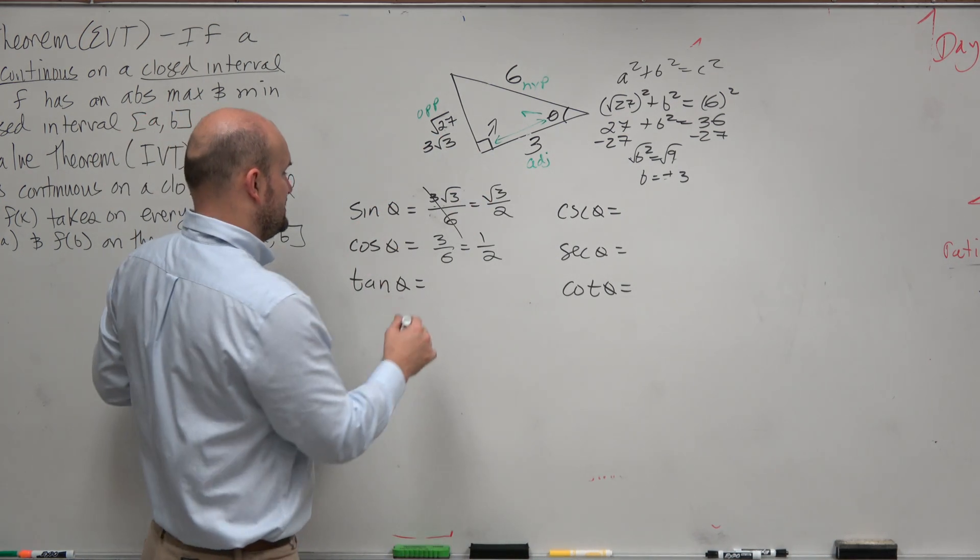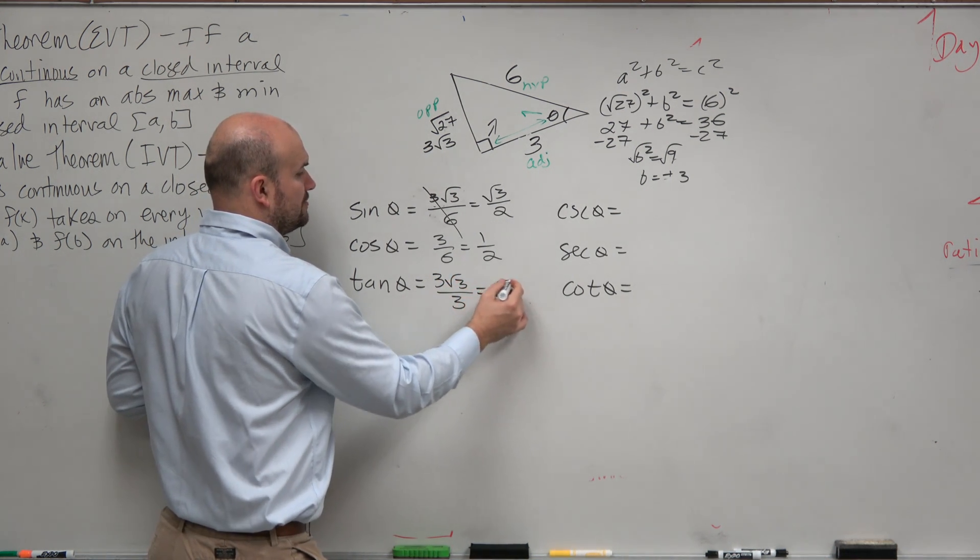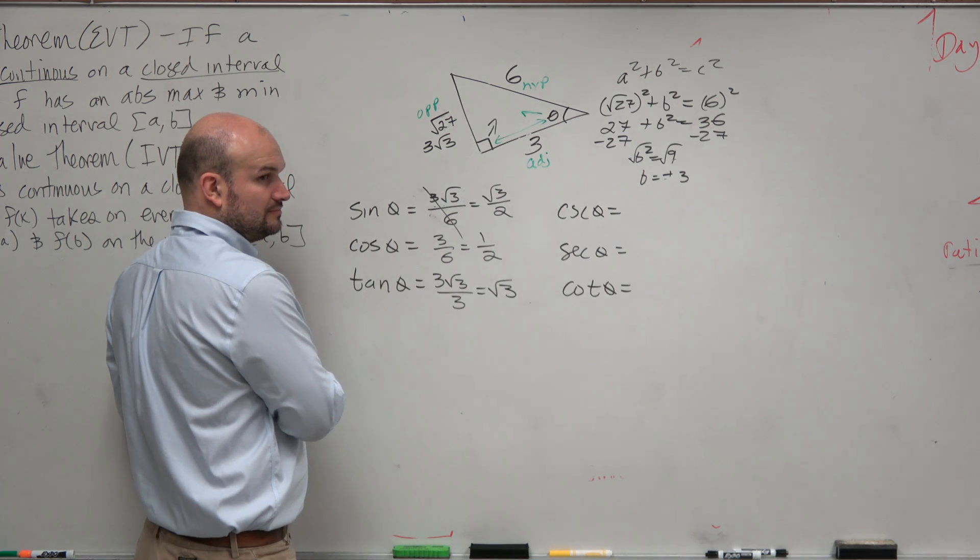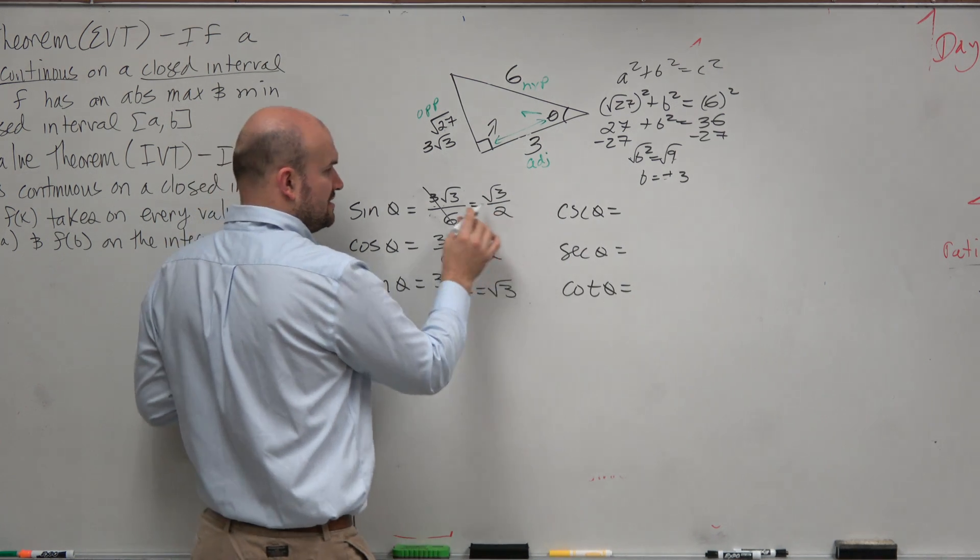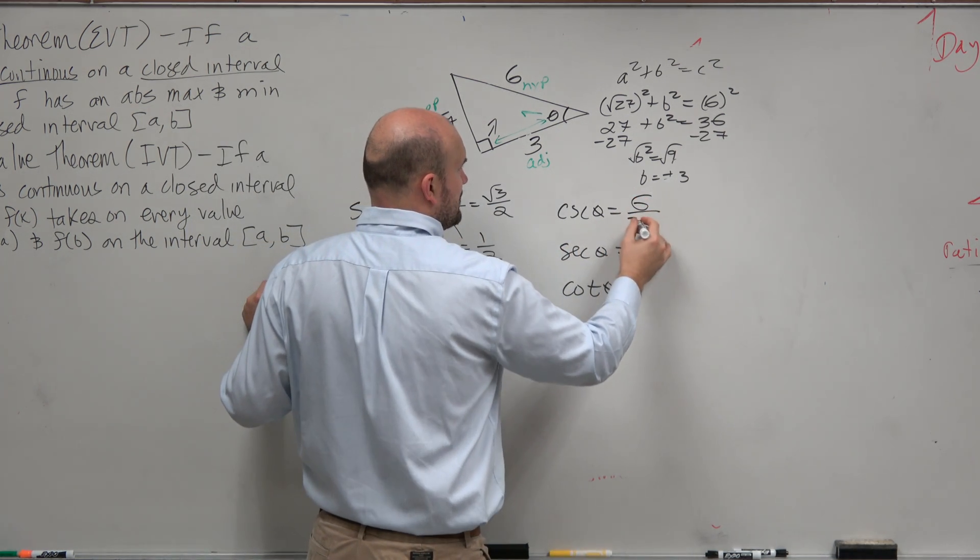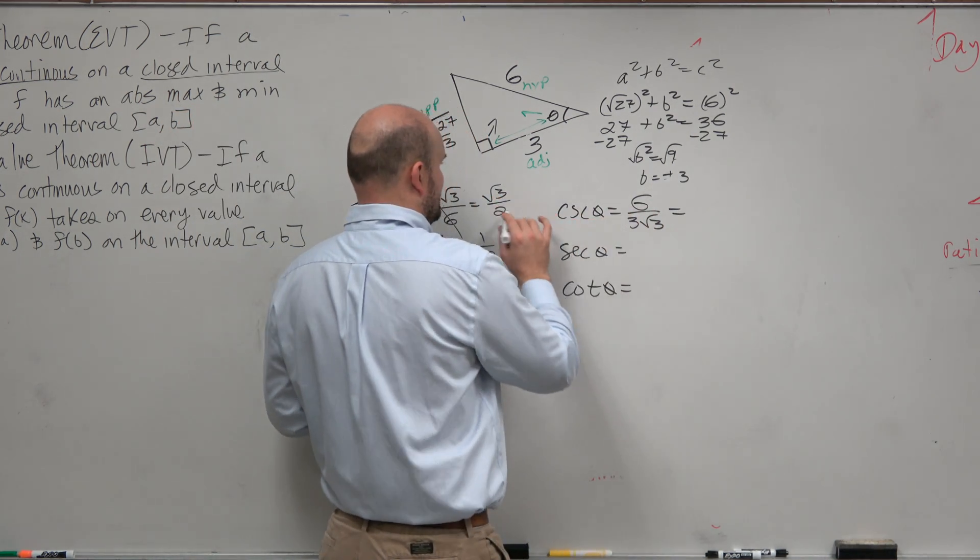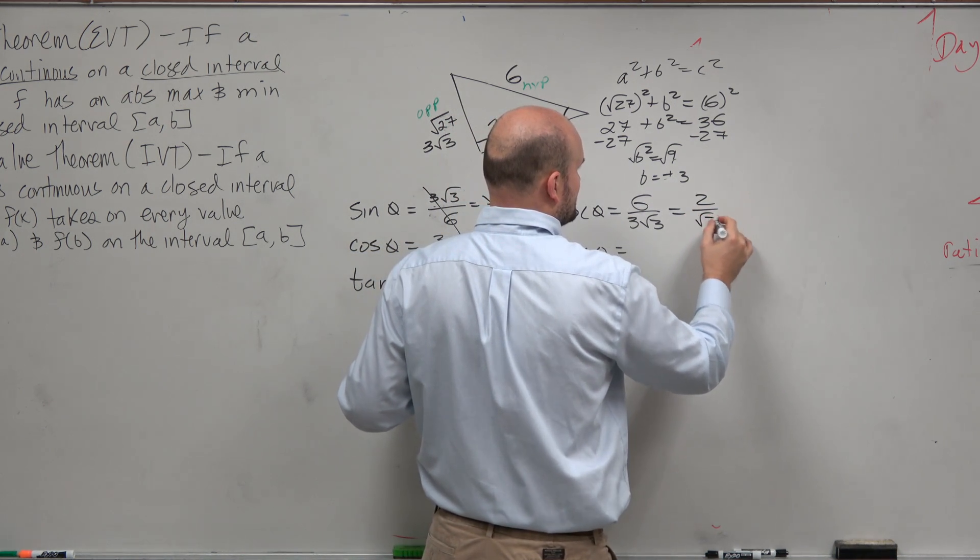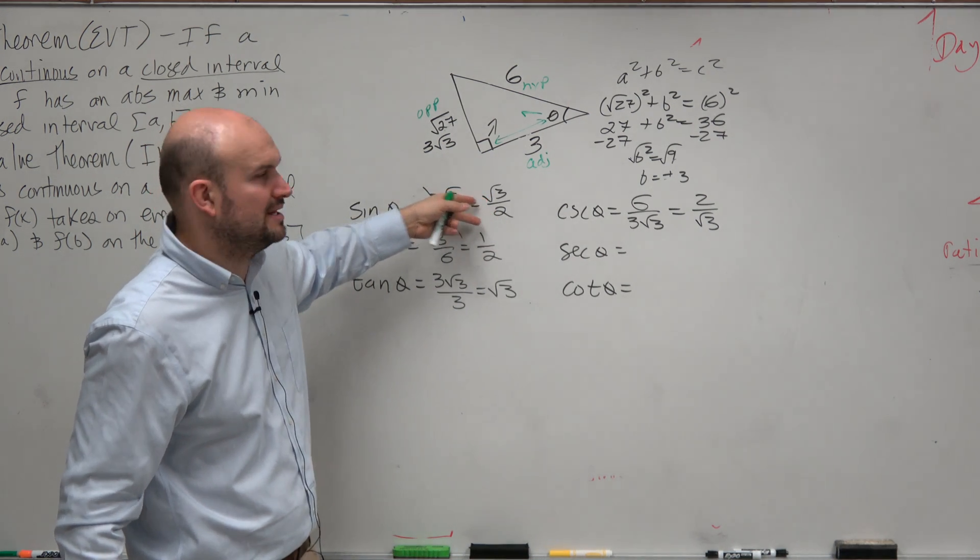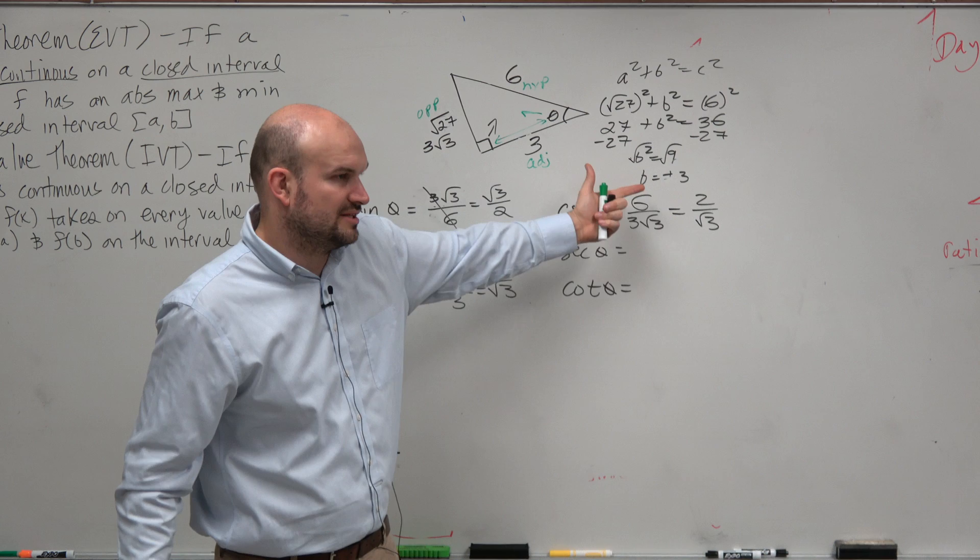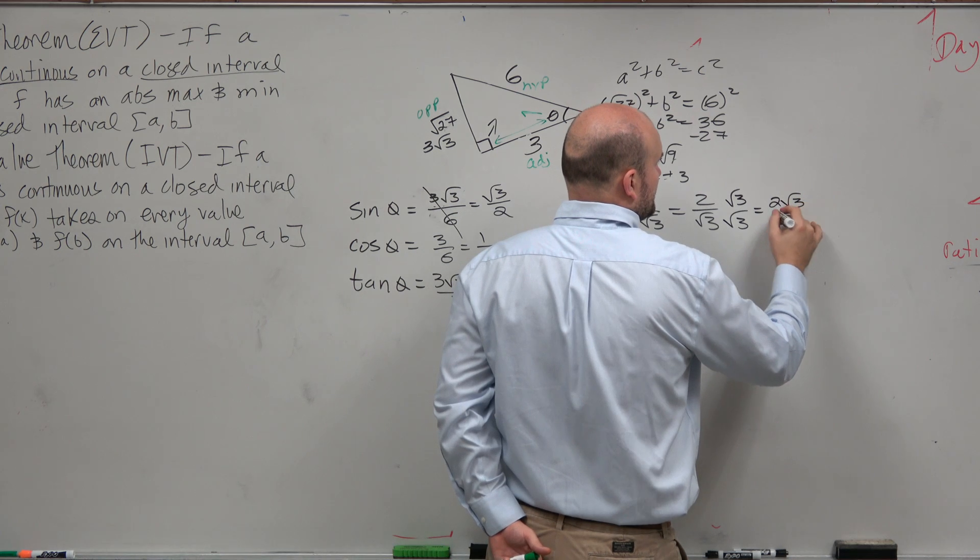Tangent is opposite over adjacent. So that's 3 square root of 3 over 3, which is equal to square root of 3. Cosecant is now just the reciprocal of this. So I could write this as 6 over 3 square root of 3, but it'd be probably easier just to write that as the reciprocal of 2 over radical 3. It'd be a little bit easier to reciprocate the final answer. Then we want to make sure we remember to rationalize the denominator. So we have 2 radical 3 over 3.